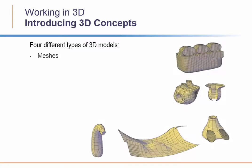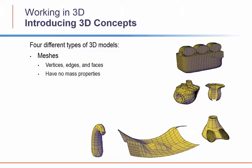A mesh consists of vertices, edges, and faces that use polygonal representations such as triangles and quads to define a 3D shape. Unlike solid models, meshes have no mass properties, but mesh objects offer unique capabilities not available for 3D solids or surfaces. For example, you can apply creases, splits, and increasing levels of smoothness. You can drag mesh sub-objects such as faces, edges, and vertices to deform the object.